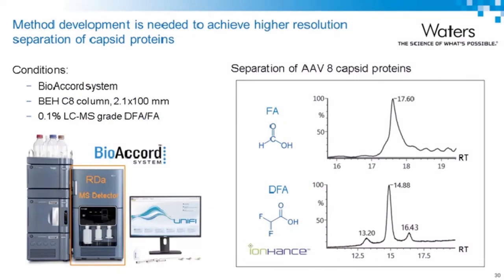Our next step was to develop the RPLC-MS method for high-resolution separation of capsid proteins. Starting on the BioAccord system with a BEH C4 column (industry standard), using formic acid as mobile phase modifier gave poor separation with a bumpy baseline from residual surfactant. Switching to LC-MS grade DFA (difluoroacetic acid) increased resolution across the proteins, flattened the baseline (indicating surfactant is separated from protein), and produced sharper peaks suggesting potential improvement in MS signal quality.